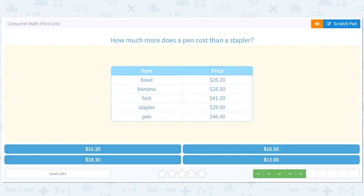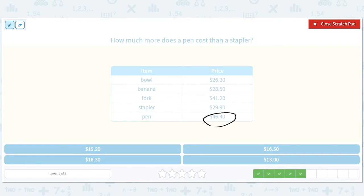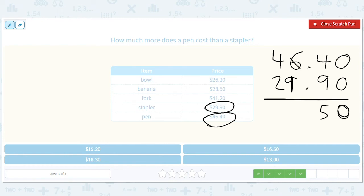How much more does a pen cost than a stapler? So you've got a pen, high end pen, stapler. Actually, I don't know how much staplers cost, I'm curious. Let me go on Amazon and find out. $46.40, $29.90. I know that there's some high end pens that could cost $46, no problem. I'm sure there are staplers that cost $50. $14 minus $9 is $5. $15 minus $9 is $6, and we get $16.50.